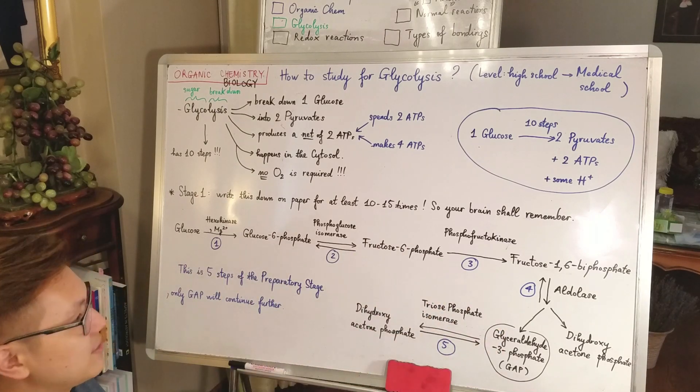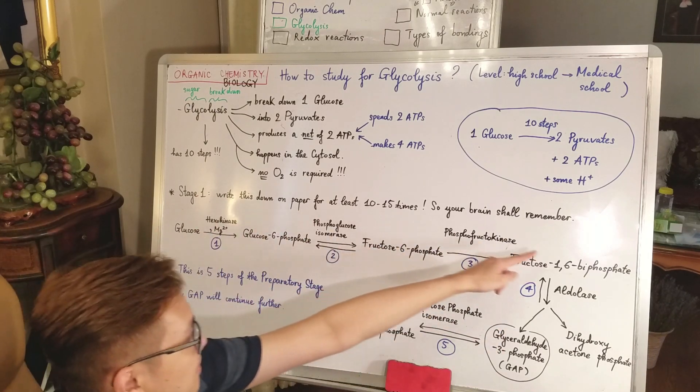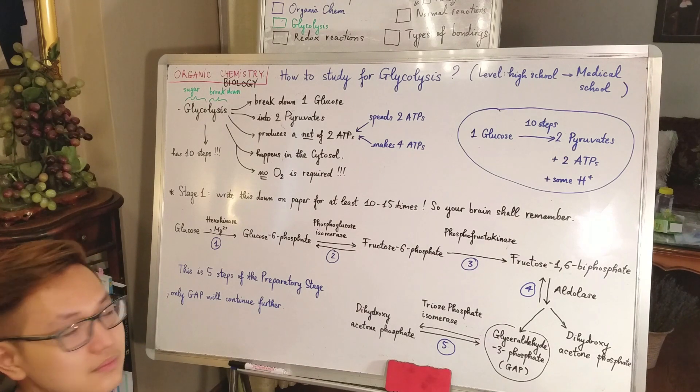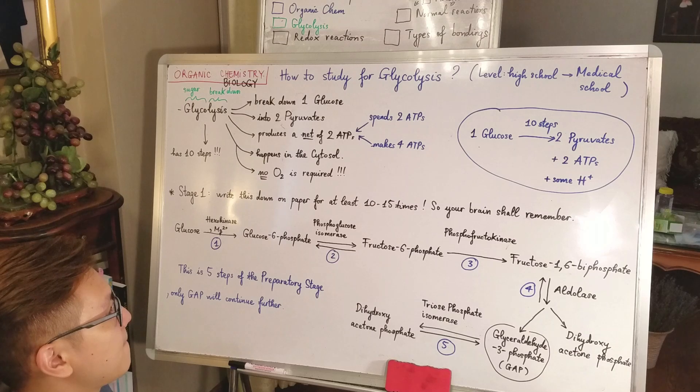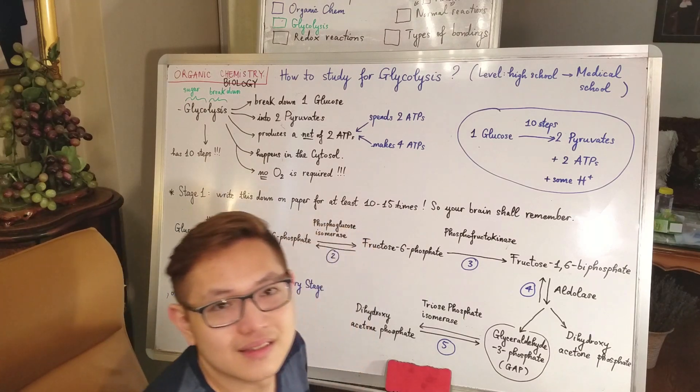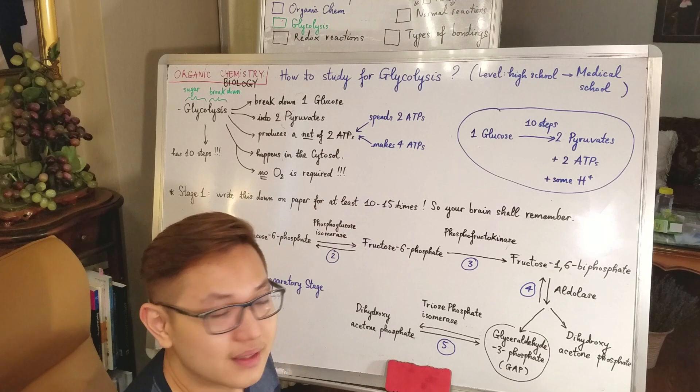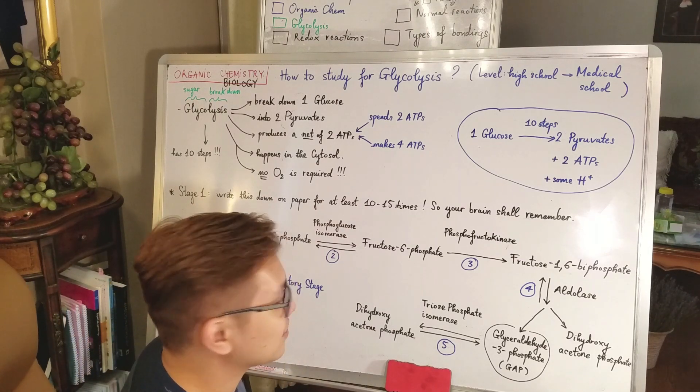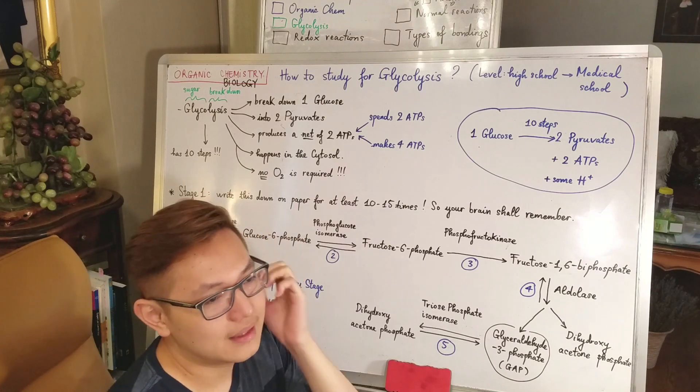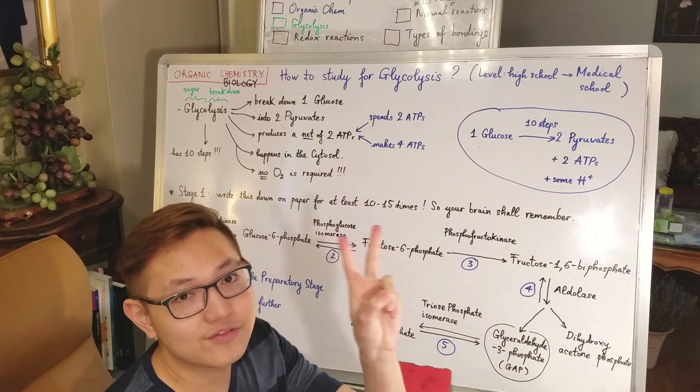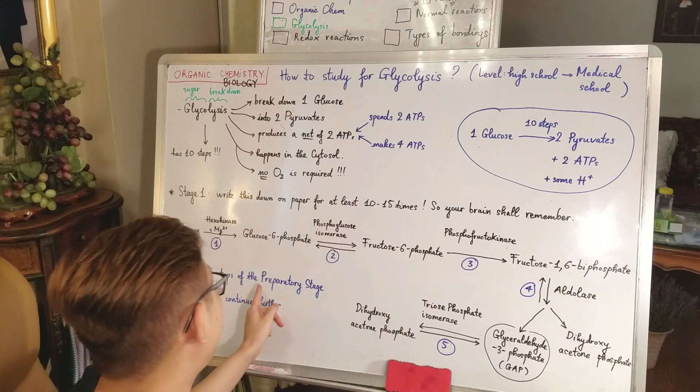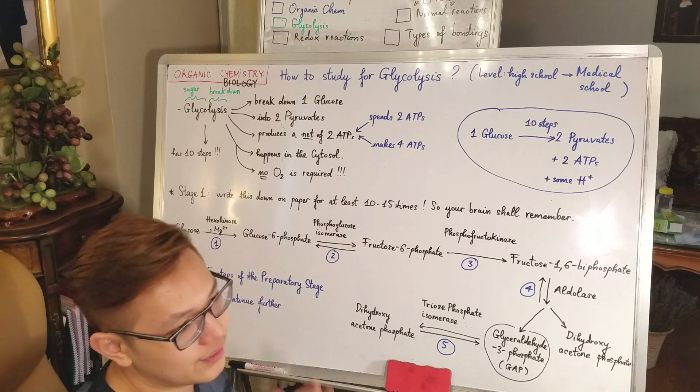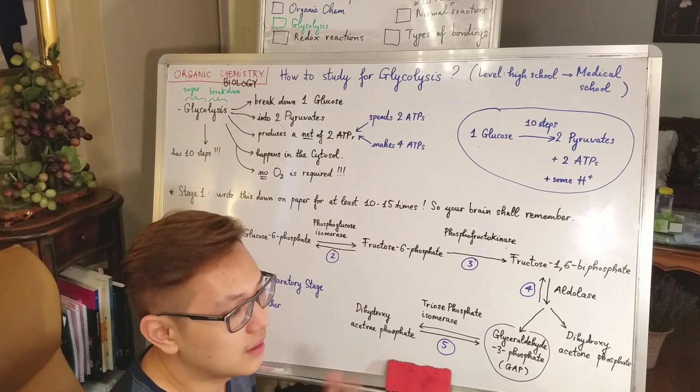Steps one to five, let's do it. Copy this thing down. After you have copied this thing down, I'll explain further. In ten steps of glycolysis it's actually divided into two main phases.